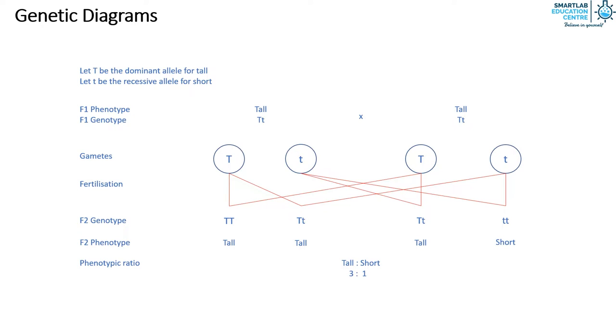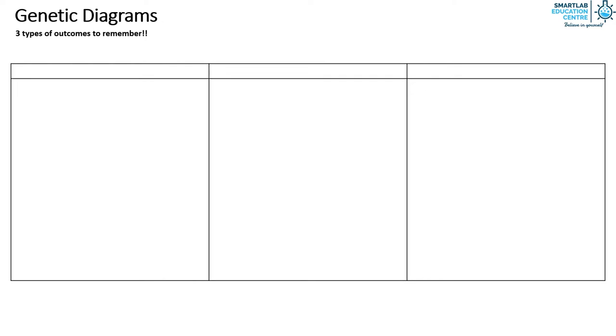Now that we know how to construct a genetic diagram, there are three phenotypic ratios that we must remember as they can be very useful for us. We will continue to use the same example of short and tall for all three scenarios.